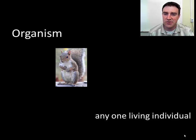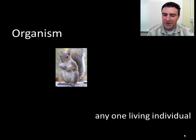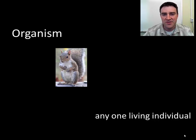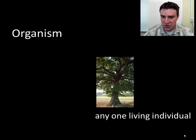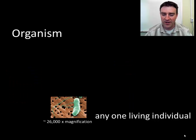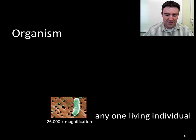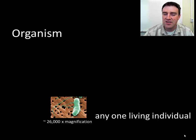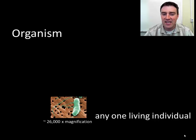Let's start with the very simple example of studying an organism. Most students are familiar with what an organism is — just any one living individual. So a squirrel, a tree, a fungus, or even a microorganism, a smaller organism that maybe we can't see with our own eyes, but with the aid of a microscope we could identify as a bacterium. So any one living individual.